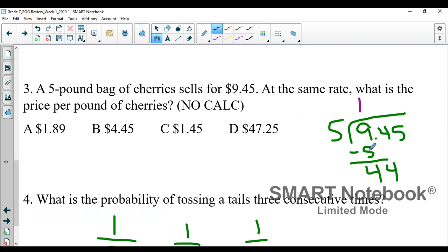Five can go into nine once, and then you carry on. Nine minus five is four, you bring down your next four. So right away we know, because there's my decimal point, that the price per pound of cherries is going to be one dollar something. That automatically eliminates answer choice B and also eliminates answer choice D. Now we can work the next step: how many times can five go into 44 without going over? That's eight. Five times eight is 40.